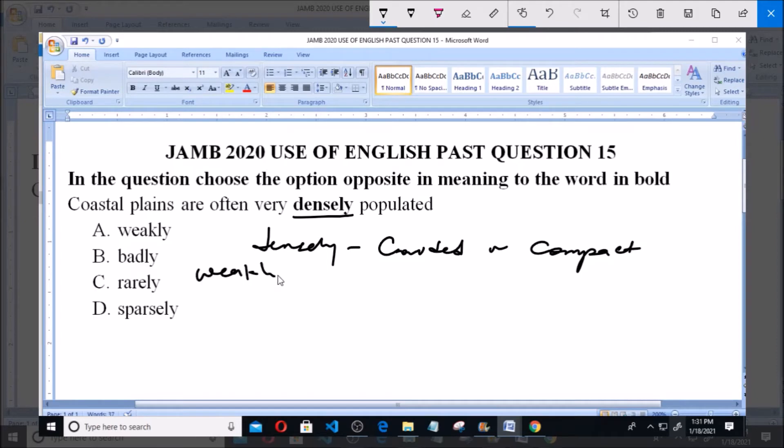Option A says weakly. Weakly here simply means frail or sickly. When you say something is weak, it means it is frail or sickly, or you can say it's delicate.